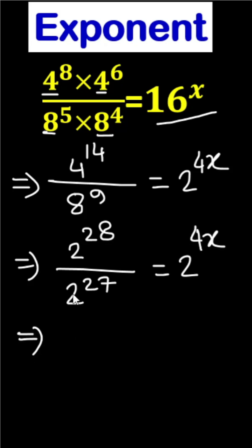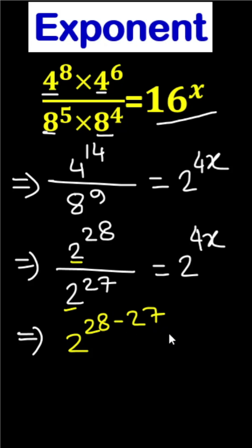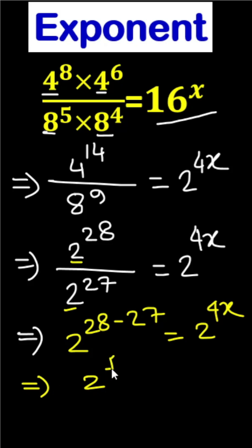Now we also know that once the bases are the same in division, the powers will be subtracted. So 2 to the power 28 minus 27 equals to 2 to the power 4x. So here is 2 to the power 1, because 28 minus 27 is 1, and here is 2 to the power 4x.